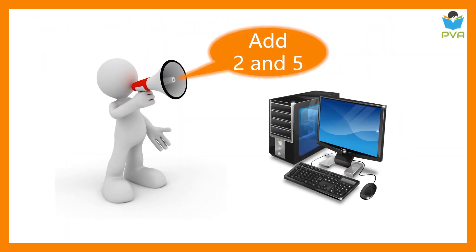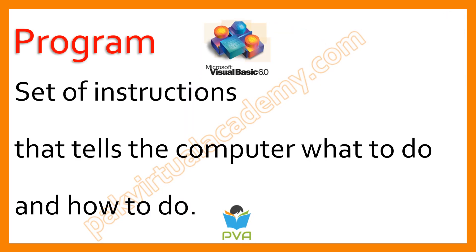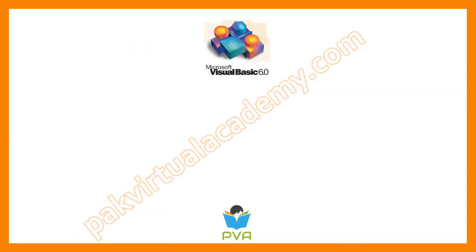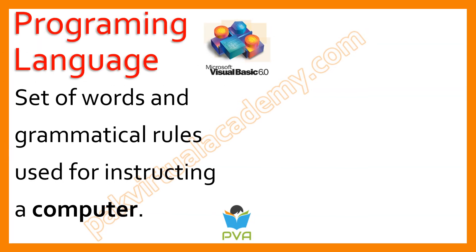A computer cannot do anything by itself. It must be taught or instructed to do something. A set of instructions that tell the computer what to do and how to do it is called a program. Computer programs cannot be written in natural languages like English, so programming languages are developed for this purpose.